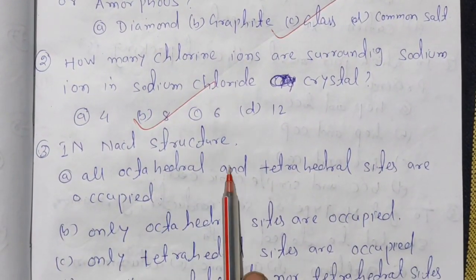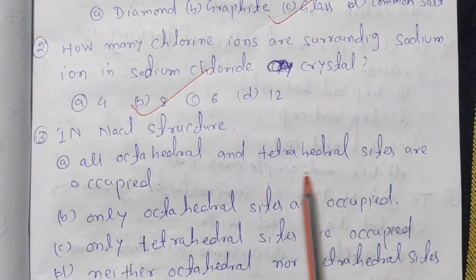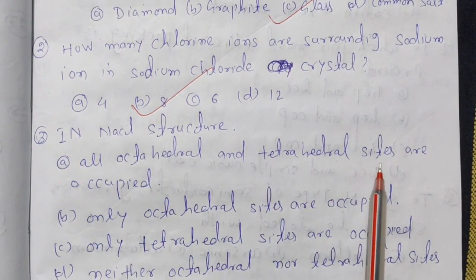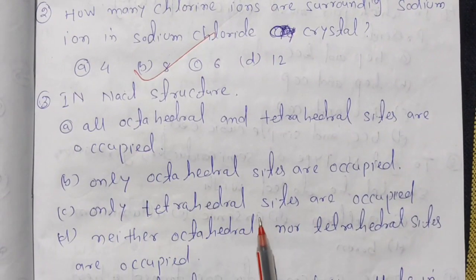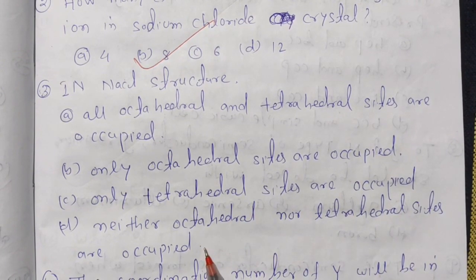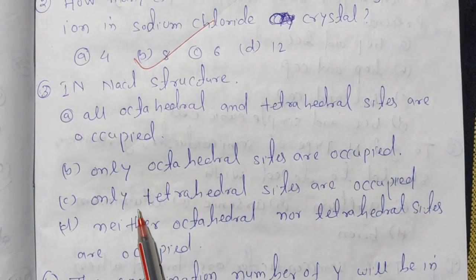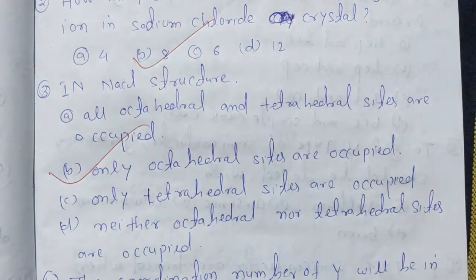In NaCl structure, are all octahedral and tetrahedral sites occupied, or only octahedral sites, or only tetrahedral sites, or neither? In NaCl structure, only octahedral sites are occupied. The answer is option B.